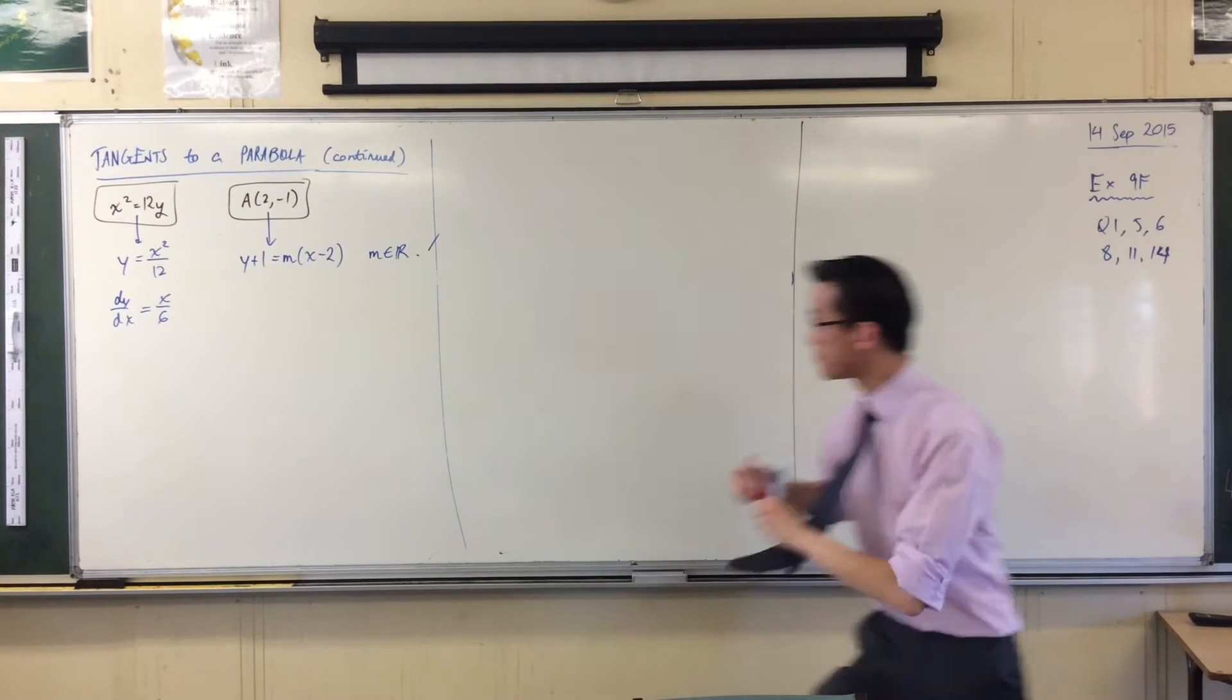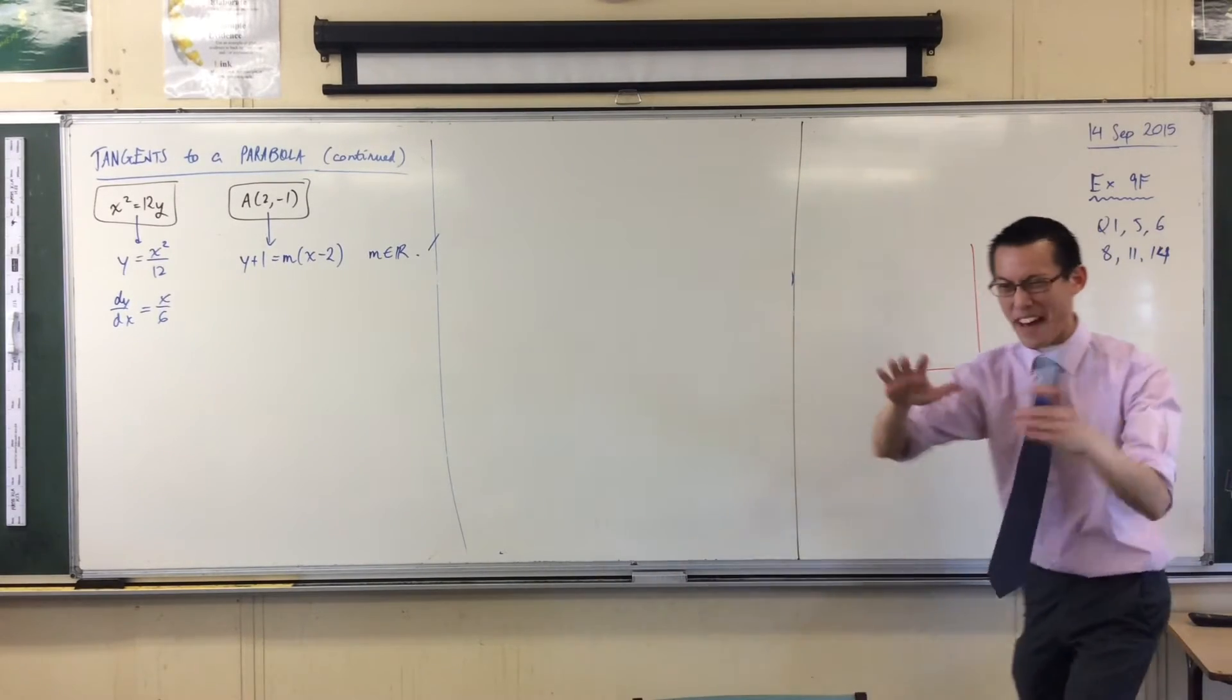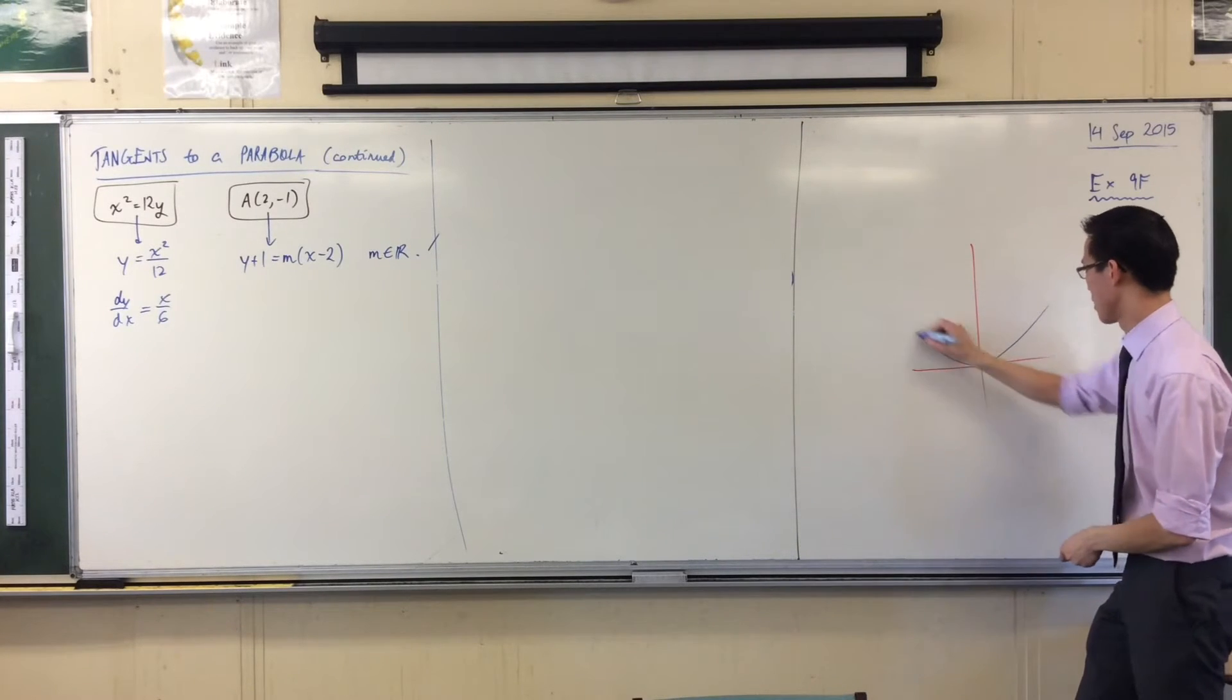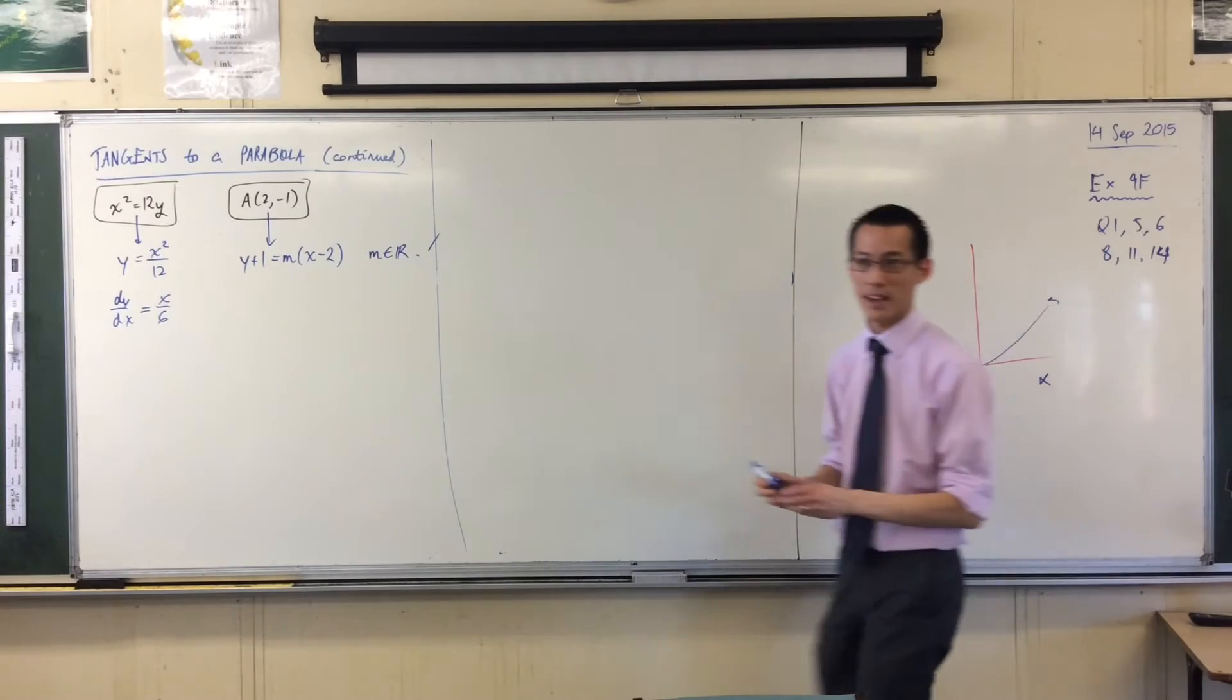Y equals X squared on 12, so we're looking at this kind of fattish looking parabola, like so, okay? Two negative one is going to be somewhere over here, yes? Okay? Now, this, what I've just written in here, is every single line that passes through that point of every gradient.